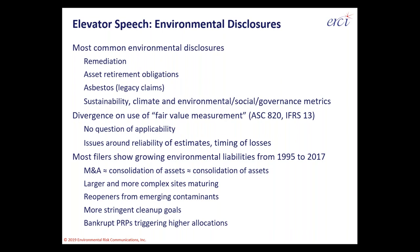We'll be allocating our attention in that order, with the most going to remediation and the least to the emergent group. I'll also cover a little on the divergence in the use of fair value measurement, expressed in generally accepted accounting principles. The specific citations are ASC 820 under FASB, IFRS 13 under IASB rules, and GASB 72 for state, county, and municipal governments here in the US. There's no question about applicability, but there is a question about the reliability of estimates and the timing of when the liabilities will settle out.